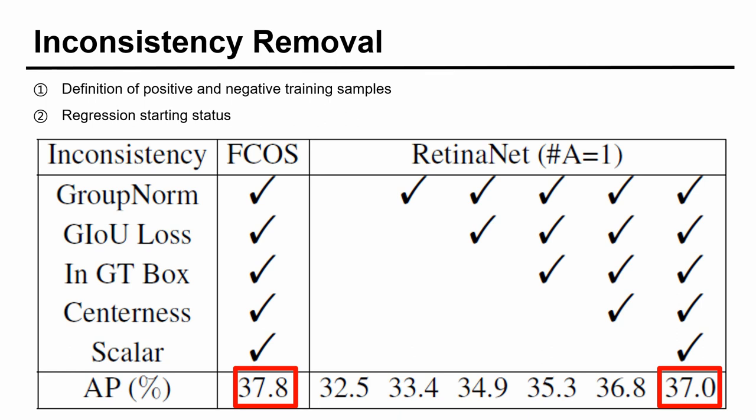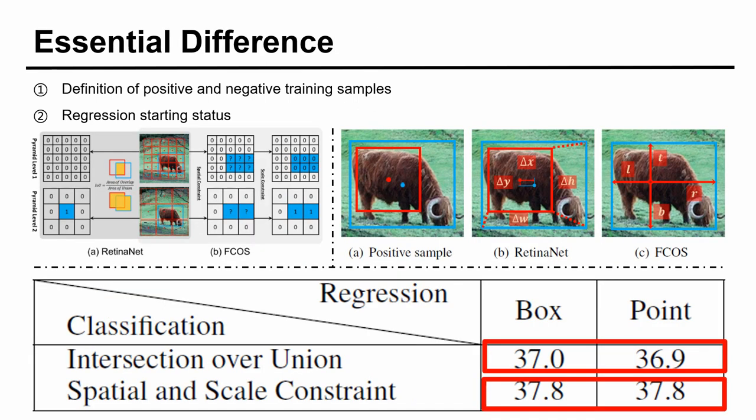By now, after removing inconsistencies, we can explore their essential differences in a fair way. When RetinaNet and FCOS use the same definition of training samples and different regression starting status, they have similar results.